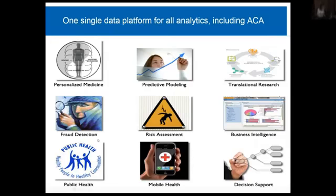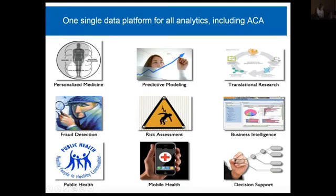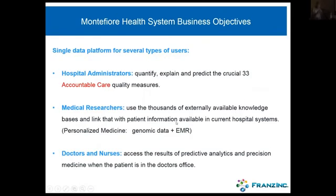Here's what we can do: personalized medicine — you have a particular kind of cancer, there are five ways to attack it, what is the best way for you given your genetic makeup? Translational research — what is the best treatment for this particular disease based on our data? The insurance industry is very interested in fraud detection. It's one platform for many questions, usable by hospital administrators interested in accountable care quality measures as well as medical researchers, doctors, and nurses.